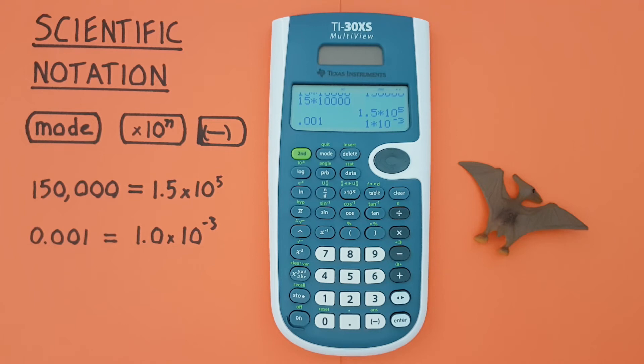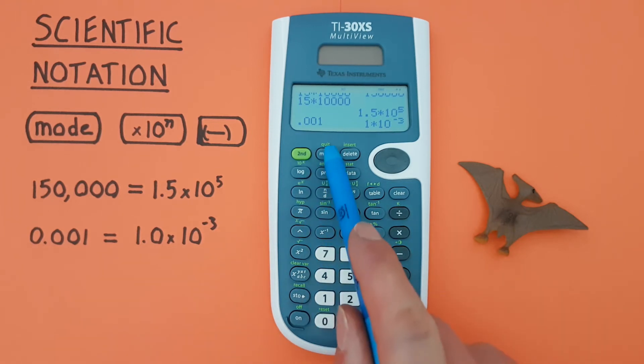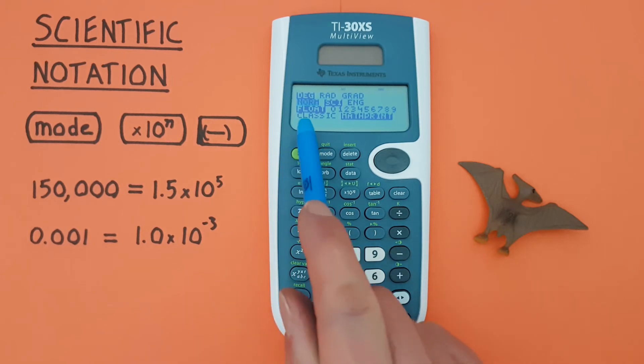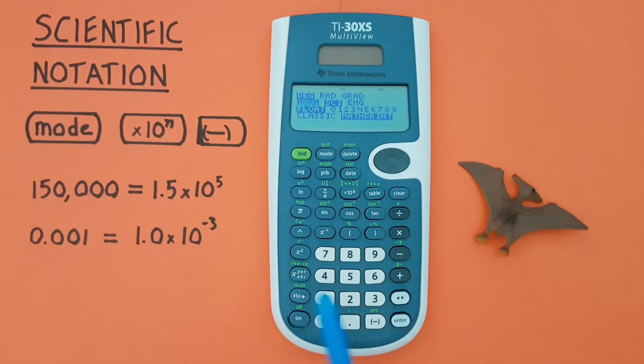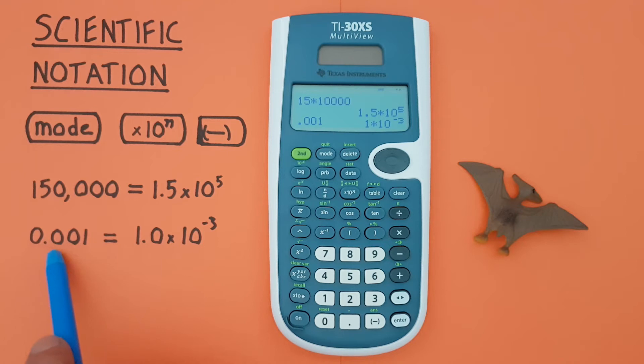When we're done with this mode we can go back to normal mode again by pressing the mode key, scrolling down 1 to norm, highlighting that and pressing enter and then clear. We now see that when we enter 0.001, we get it in its decimal form.